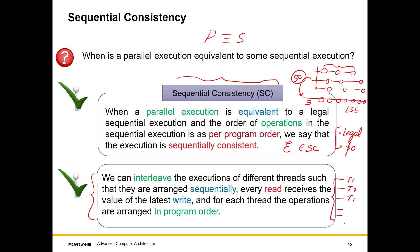This will be considered a sequentially consistent execution if, number one, it is legal — which means every read receives the value of the latest write. In a sequential world, the latest write is easy to find: we just walk towards the left and find the latest write to the same address. And for each thread, taking a projection with respect to a certain thread, the operations appear to be in program order. We can say that this predicate holds for every thread, that the sequential execution projected on every thread appears in program order.